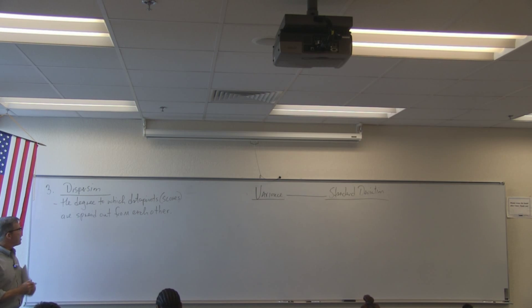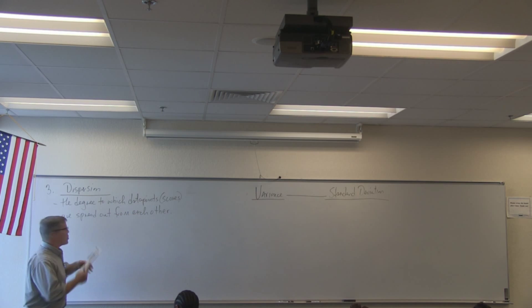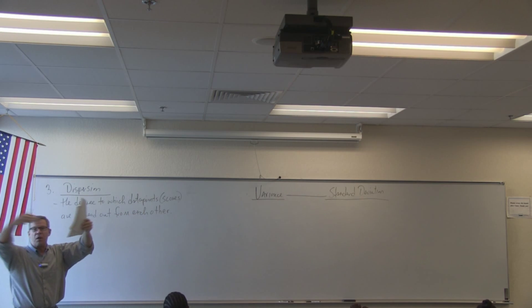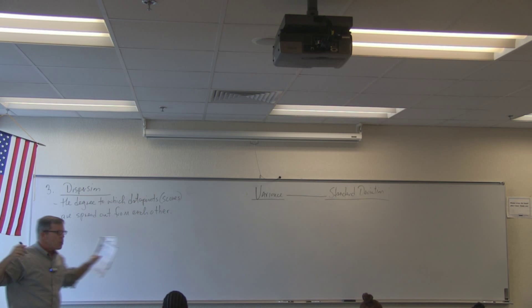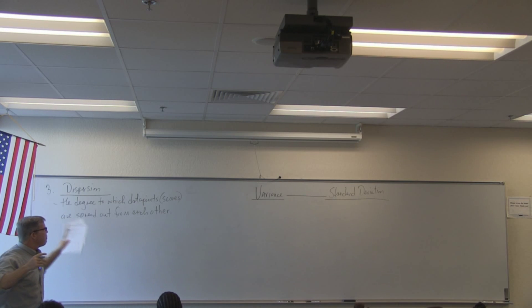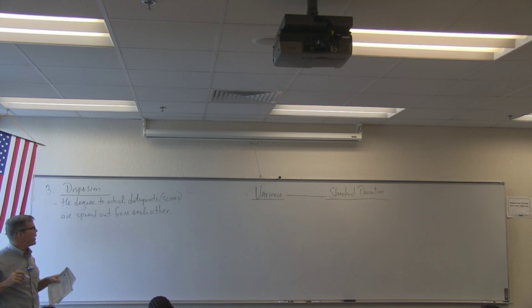Measures of dispersion refers to the degree to which our data points, also called scores, are spread out from each other. We're talking about measures of spread.